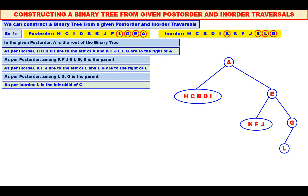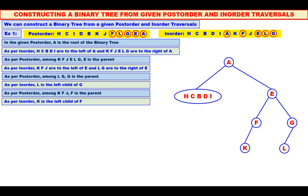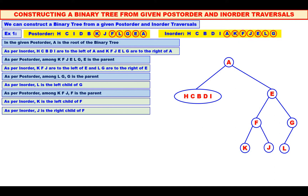Now, among K, F, J, which is the root? See the post-order — the last one is F. Therefore, F is the root. We will make F as the parent. Then we will mark F in the inorder. K is to the left of F and J is to the right of F. Therefore, K is the left child of F and J is the right child of F.